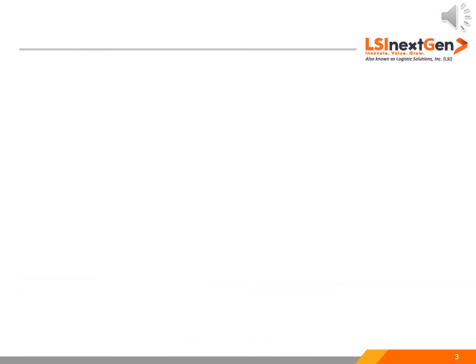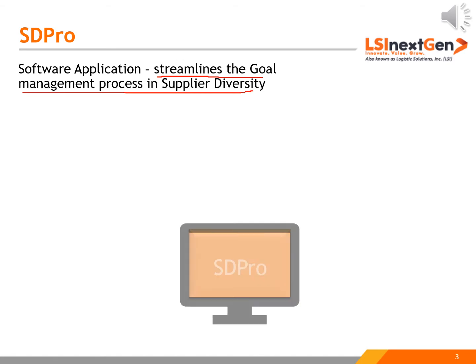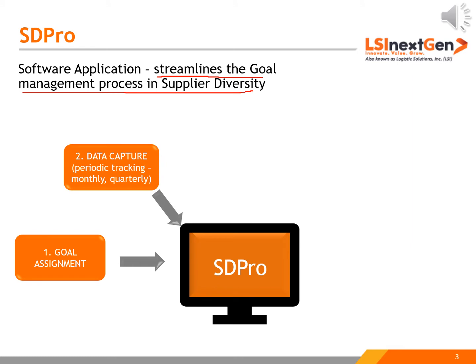SD Pro is a software application that streamlines the goal management process in supplier diversity. The platform allows corporates to assign goals, capture data, and track them periodically.